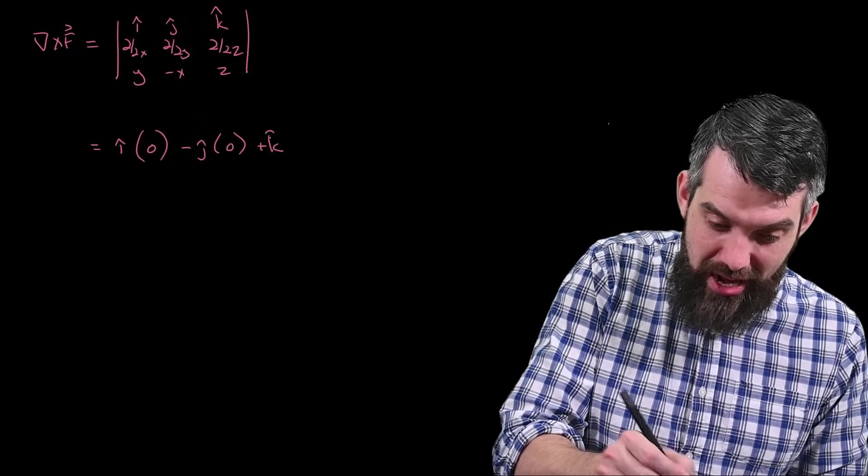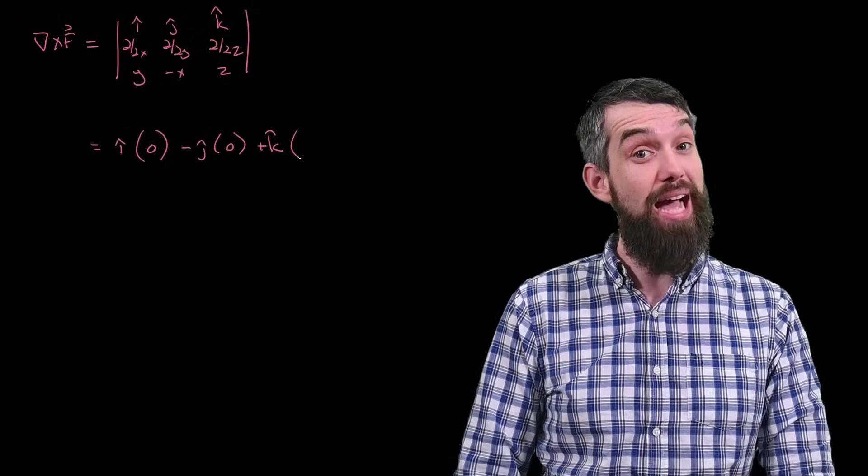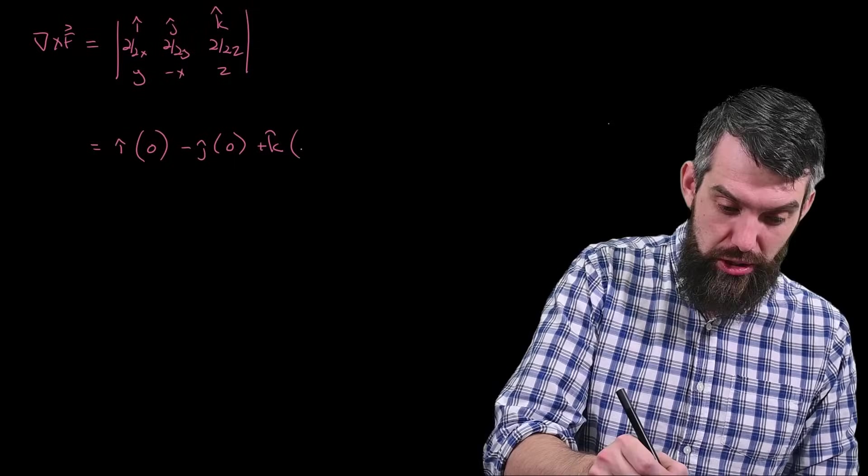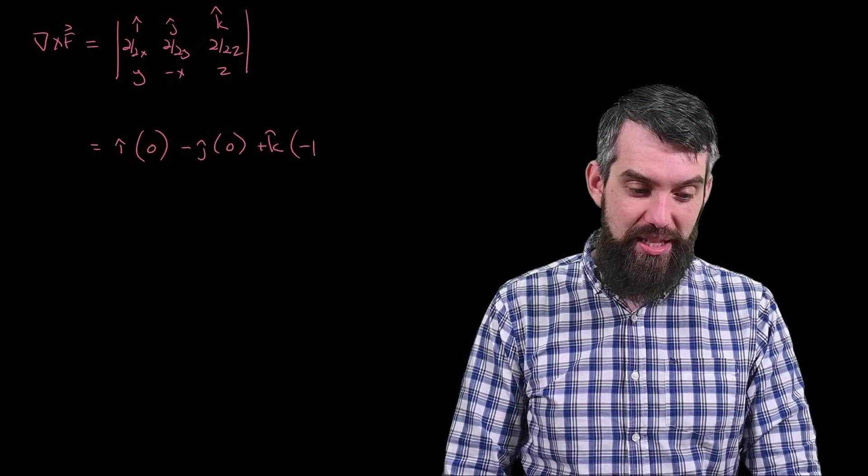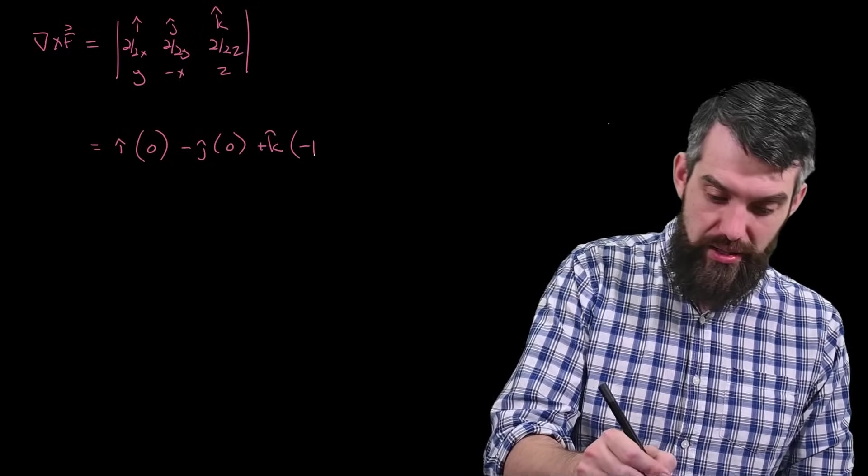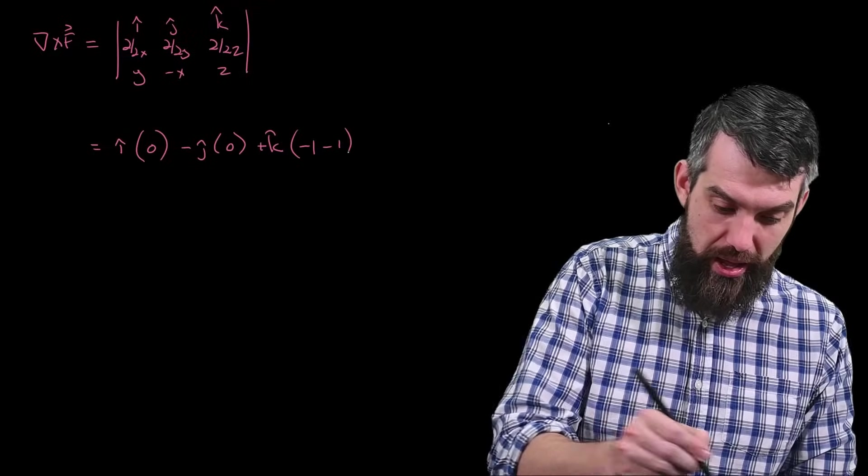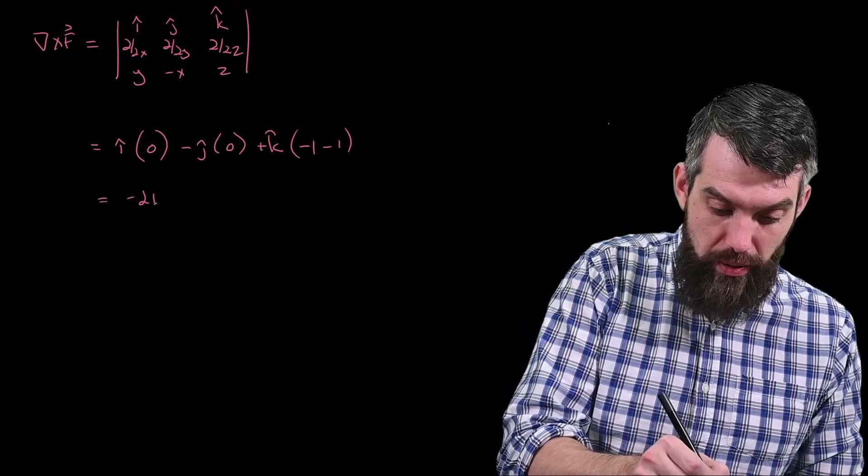And then finally I'm going to have a k-hat component, I think that's non-0 thankfully, so the k-hat is the partial with respect to x of minus x, which is minus 1, minus the partial with respect to y of y, so in other words, another minus 1, this is equal to minus 2k-hat.